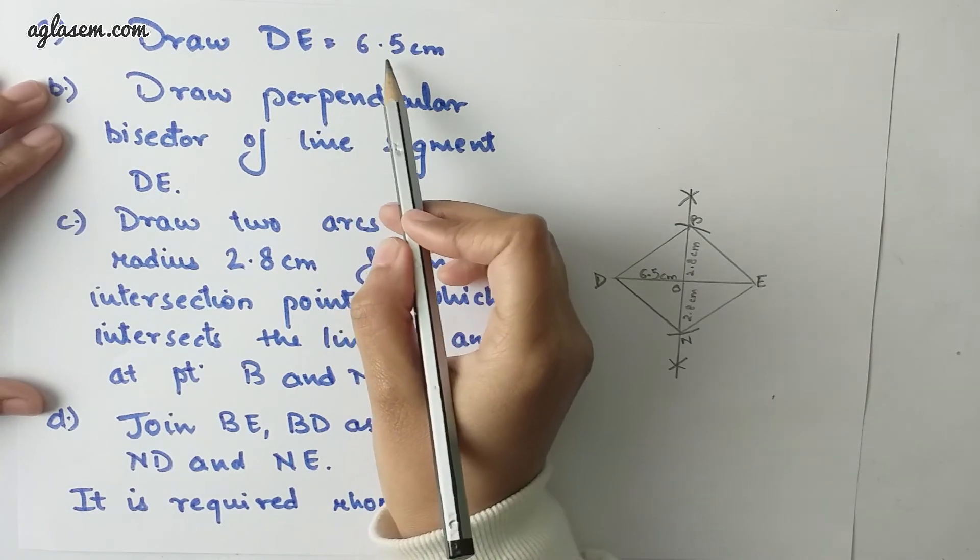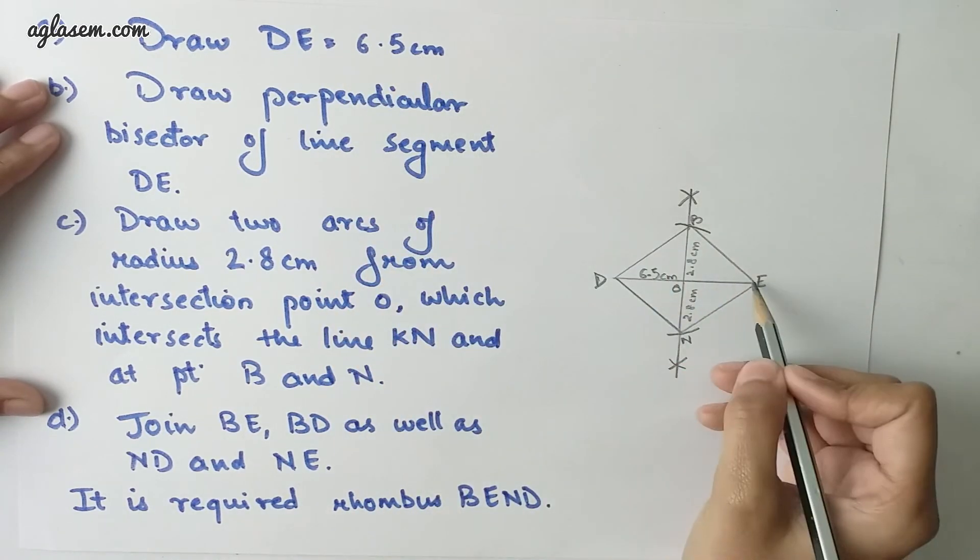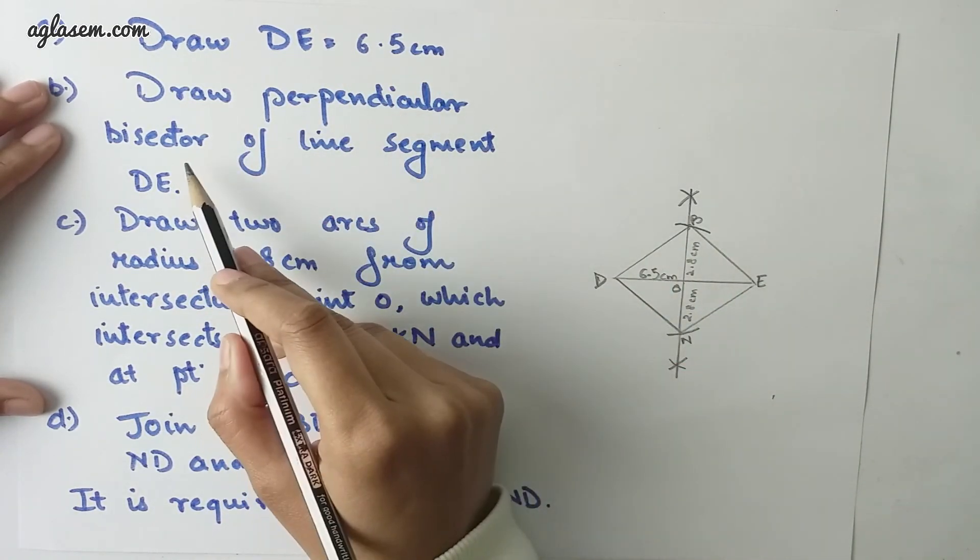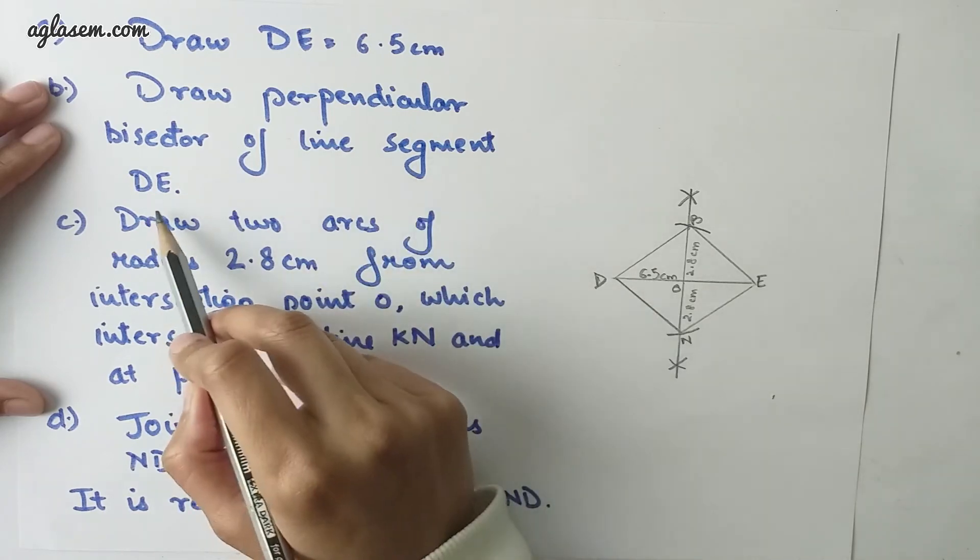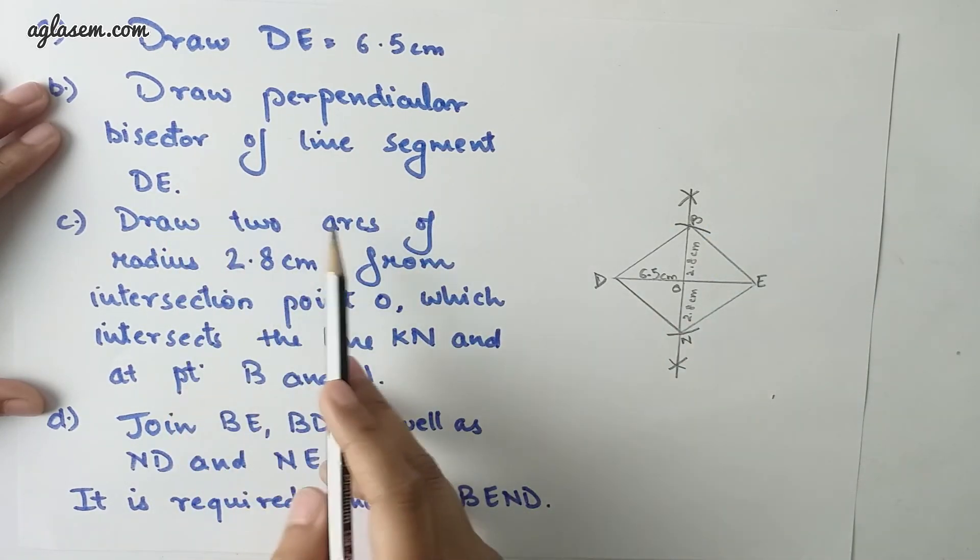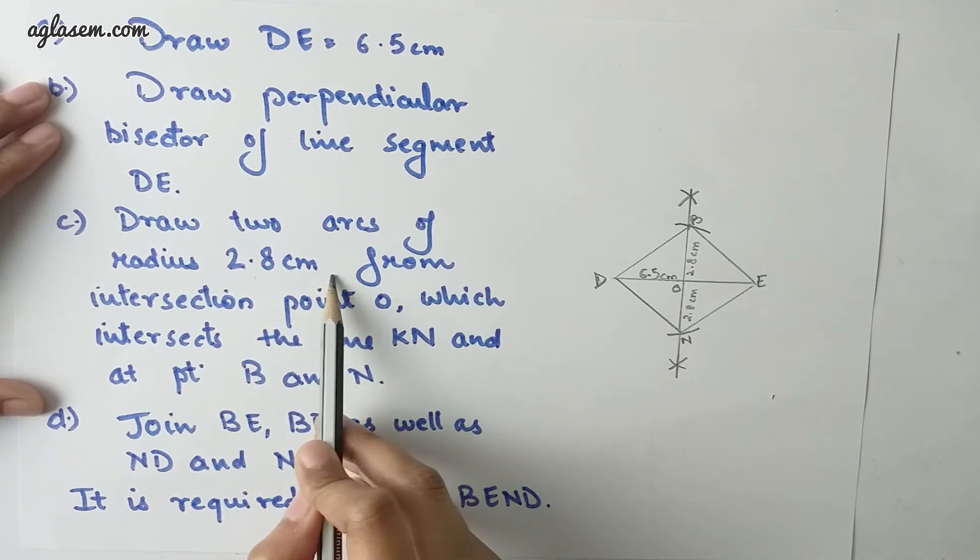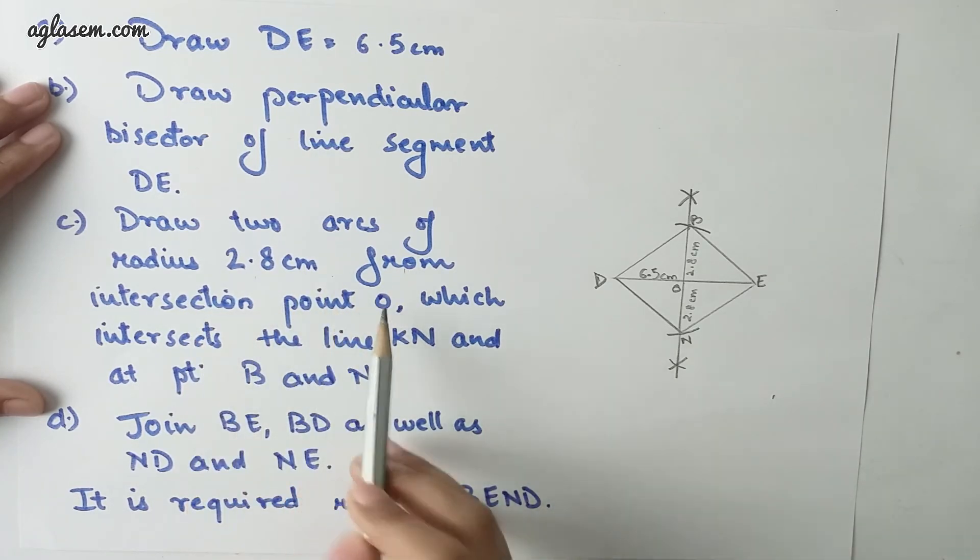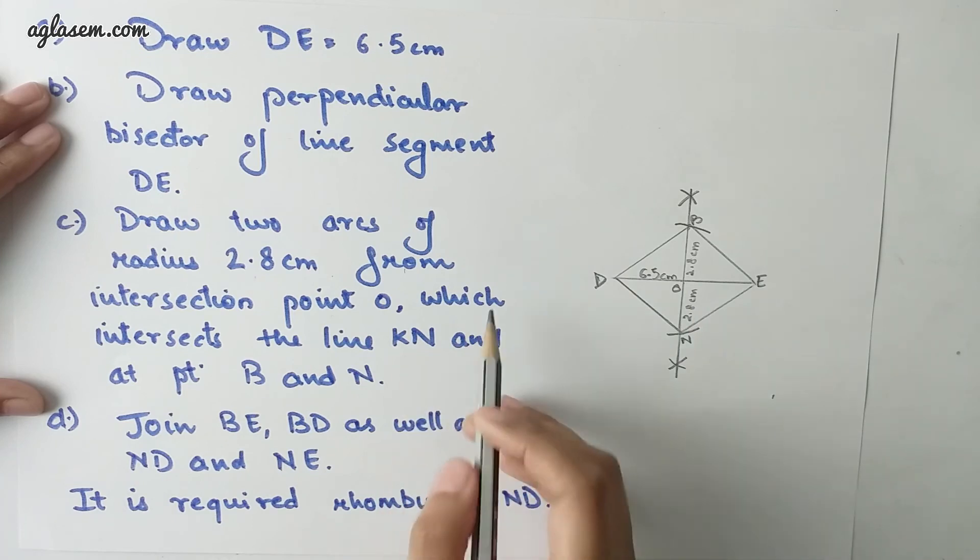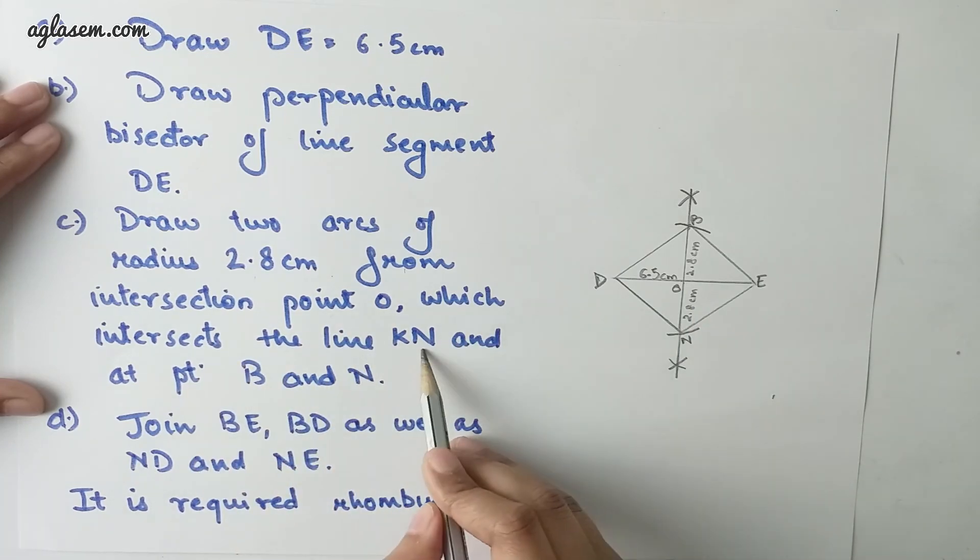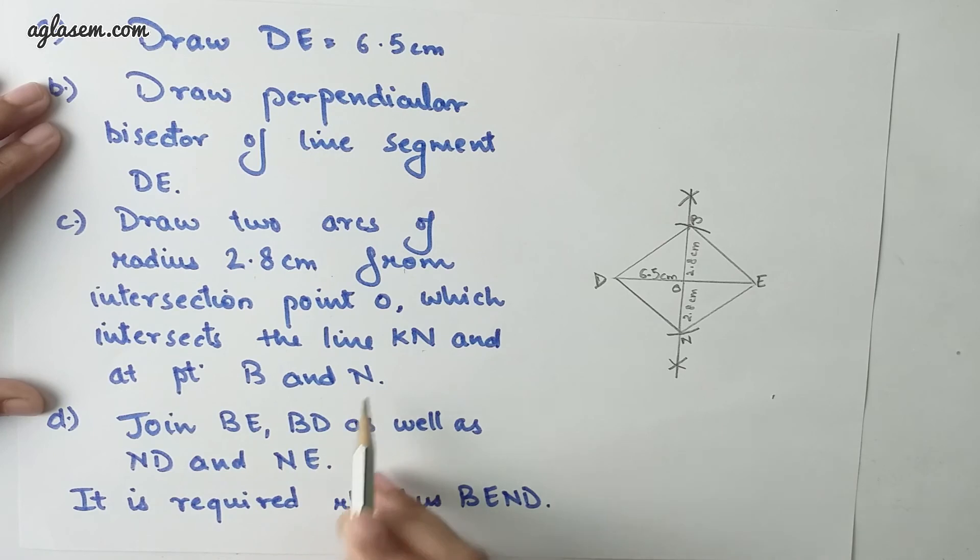Draw DE which is equal to 6.5 cm. Draw perpendicular bisector of line segment DE. Draw 2 arcs of radius 2.8 cm from intersection point O which intersects the line KN at point B and N.